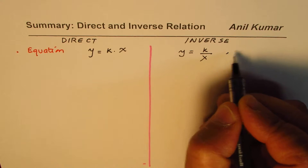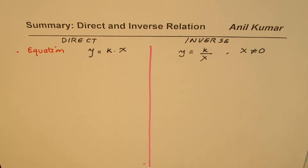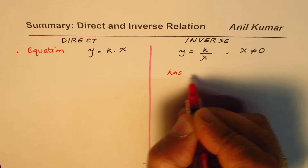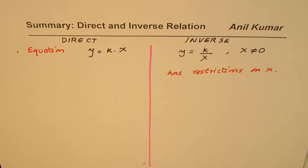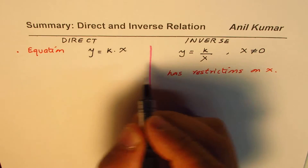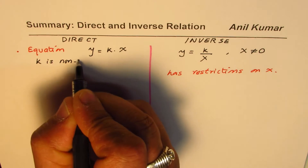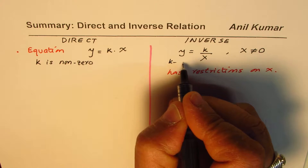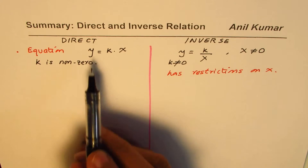As soon as we write x in the denominator, we understand that x cannot be equal to zero, so the inverse relation has a restriction on x, the independent variable. Also, k is always non-zero in both cases — k is not equal to zero.